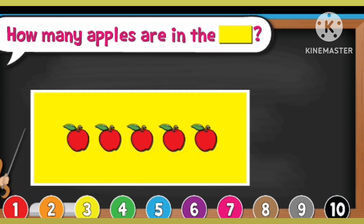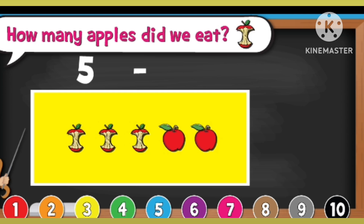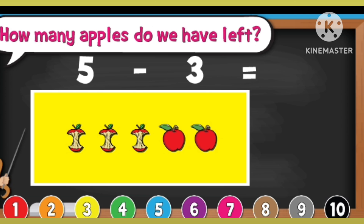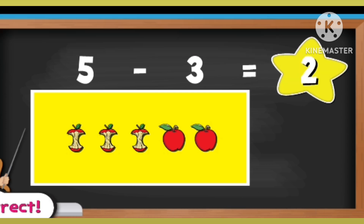How many apples are in the green square? 1, 2, 3, 4, 5. How many apples are in the yellow rectangle? 1, 2, 3, 4, 5. How many apples do we have left? 5 minus 3 equal to 2.